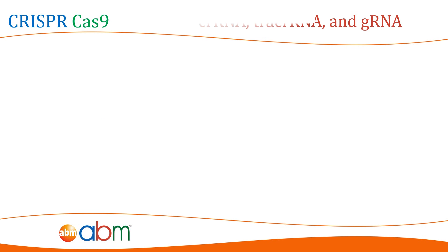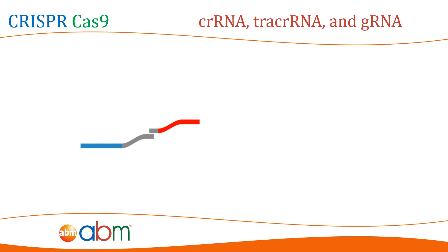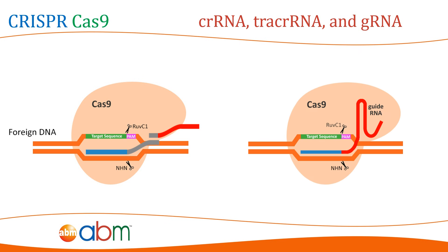In bacteria and archaea, the CRISPR-RNA and transactivating CRISPR-RNA form a complex which acts as the homing device for directing the Cas9 nuclease to the invading foreign genetic materials. The tracer RNA's scaffolding ability along with the specificity of crRNA can be combined into a single synthetic gRNA, simplifying guiding of targeted gene alterations to only a one-component system all while maintaining equal or higher efficiency.